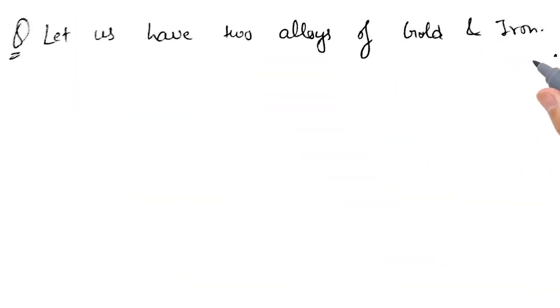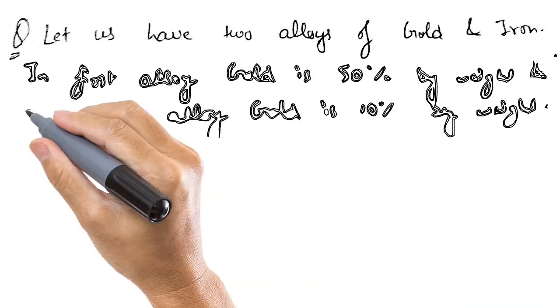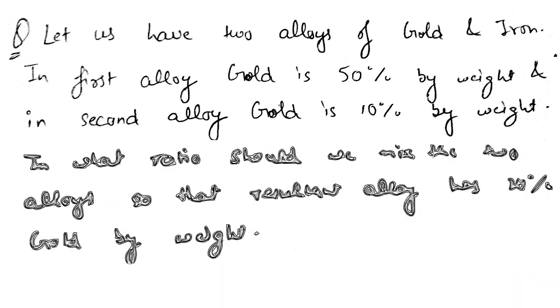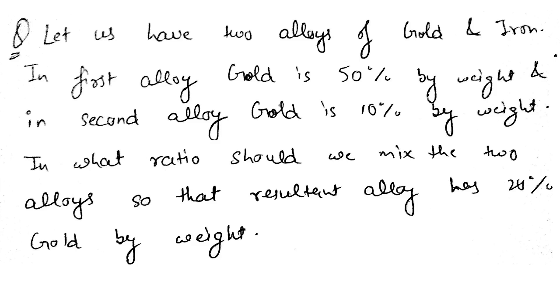Suppose we have two alloys of gold and iron. In the first alloy gold is 50% by weight and in the second alloy gold is 10% by weight. In what ratio should we mix the two alloys so that the resultant alloy has 20% gold by weight?